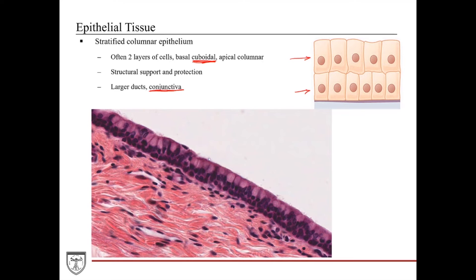Here's the conjunctiva — here's the epithelium and here's the connective tissue underneath. The basal cells are cuboidal in shape, and their nuclei form a nice row in the basal compartment. The apical compartment has true columnar cells that are staining pale, because this compartment is filled with mucin — a mucous-like material secreted by these cells onto the surface of the tissue to keep it moist and protect the underlying epithelium. These mucin-filled cells are also known as goblet cells. So in addition to structural support and protection, we can also add secretion to the functions of this epithelium.